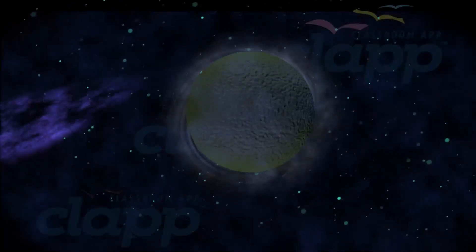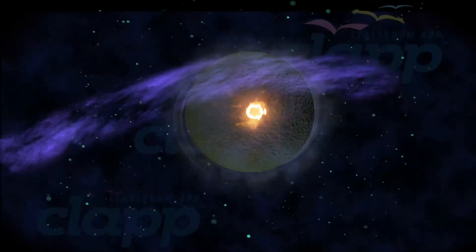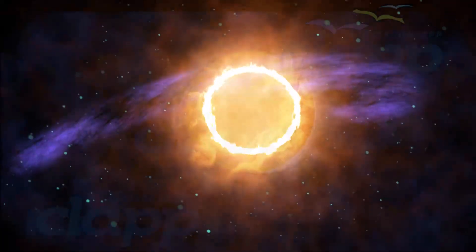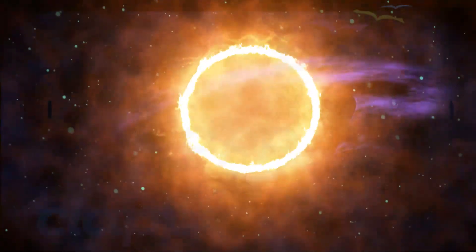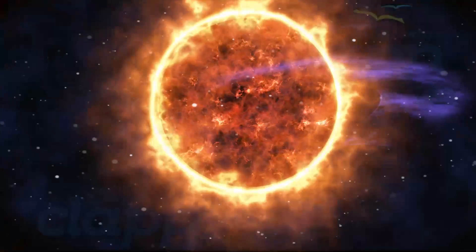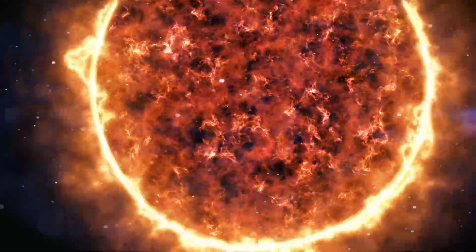The central mass became so hot and dense that it eventually initiated nuclear fusion in its core. The Sun's core fuses about 600 million tons of hydrogen into helium every second. It is by far the most important source of energy for life on Earth.